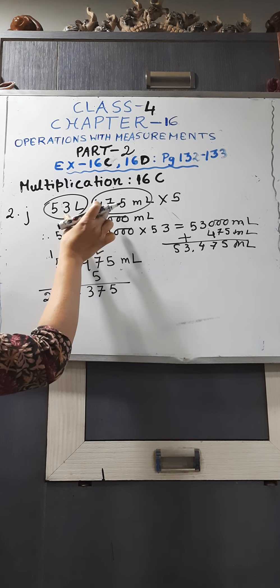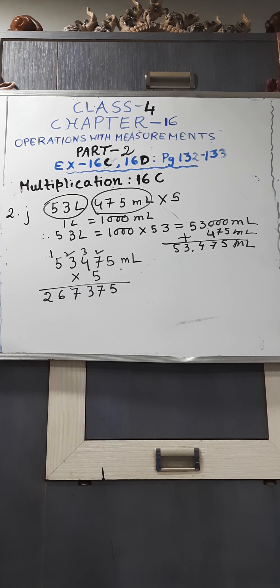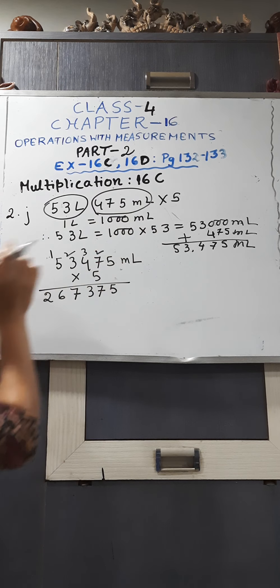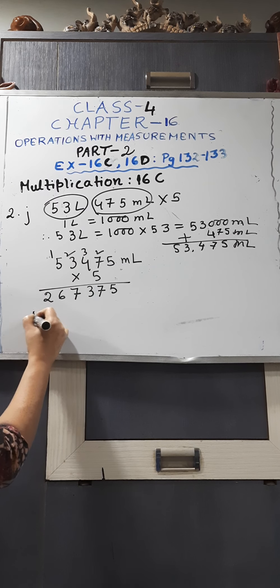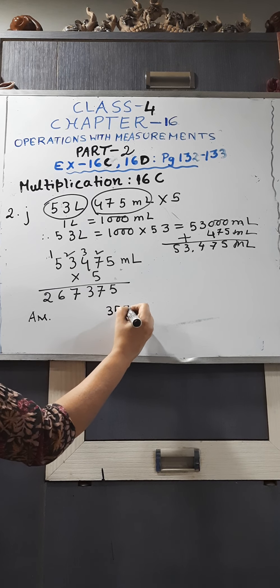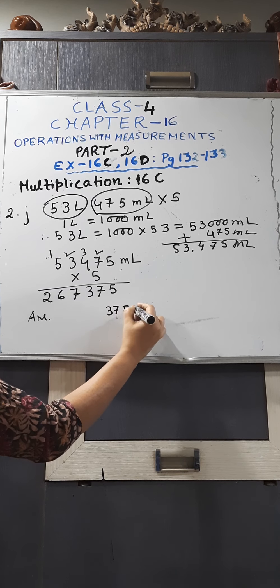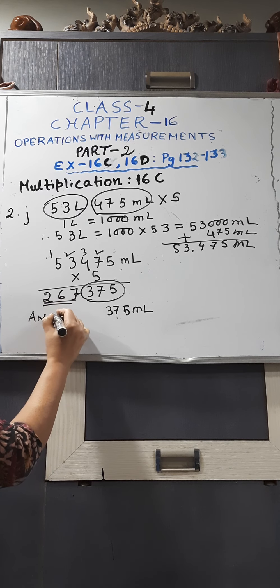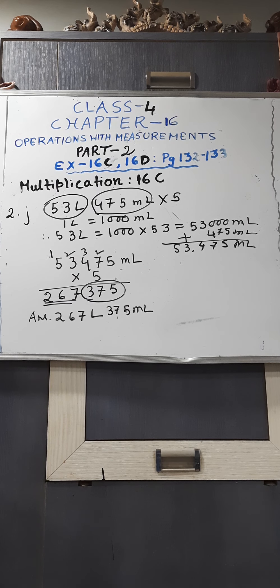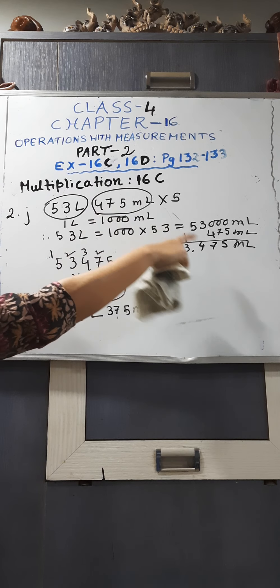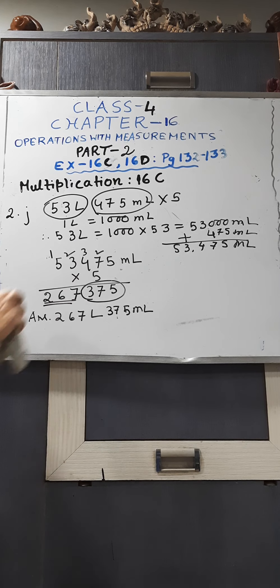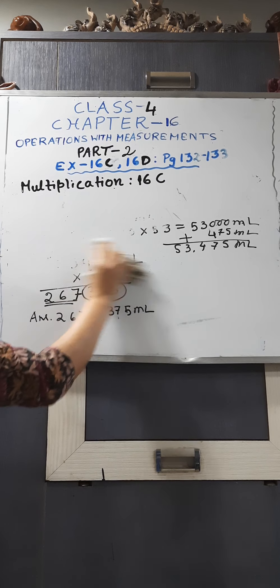While writing the answer, you will have to write the units separately as they were in your question — litre and millimetre. 3 steps are there from litre to millimetre, so you will take the last 3 digits as millimetre. Your answer will be 375 millimetre and the rest of the numbers — 267 — will be litre. So when there are bigger multiplications, convert the bigger unit to smaller unit, then add the smaller unit value, do the multiplication, and write the answer separately according to the units given in the question.